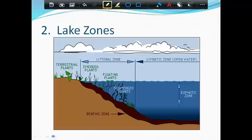Okay, next thing you want to label is the lake zones themselves. So, on your diagram, the area from where the water hits the land to where your submerged plants end is called the littoral zone.